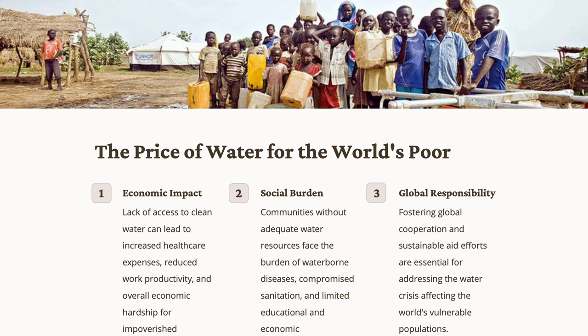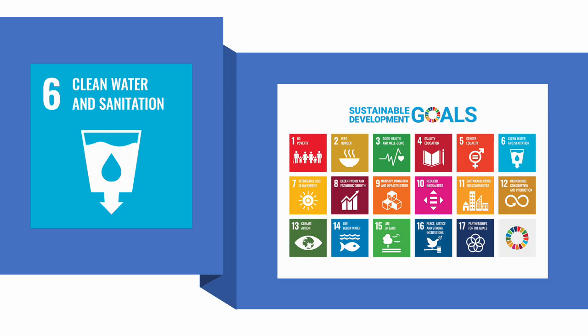A poignant real-life example is found in parts of Sub-Saharan Africa, where water scarcity and high water prices disproportionately affect impoverished communities. Organizations like Water.org and the United Nations Sustainable Development Goals framework are working to alleviate this crisis by implementing projects to provide water for the world's poor. Among the 17 SDGs, the sixth goal specifically addresses clean water and sanitation.